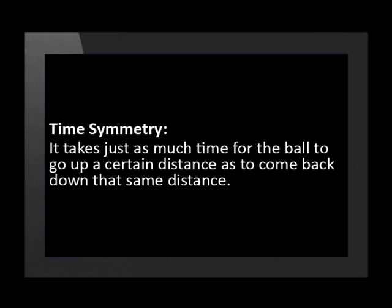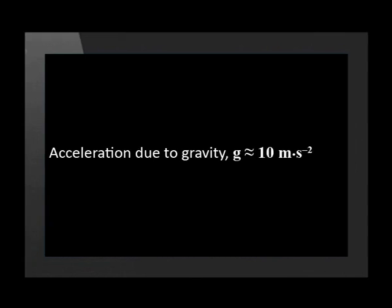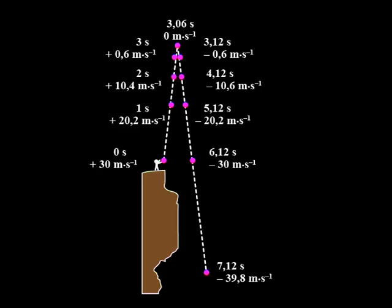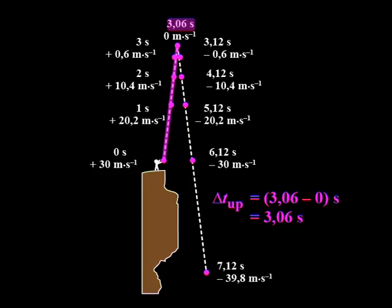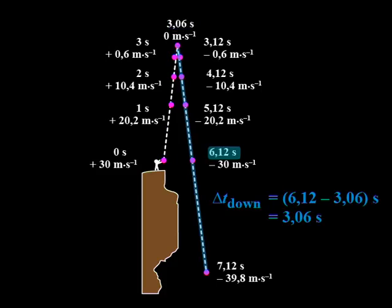It takes just as much time for the ball to go up a certain distance as to come back down the same distance. We've been using simplified data to help us see the patterns, but remember that the acceleration due to gravity is actually closer to 9.8 meters per second squared. So what does the real data of our falling ball look like? Even though the numbers are not as nice to work with, you can see the same patterns. The upward and downward velocities at the same height still have the same magnitudes, and the time symmetry is still present.